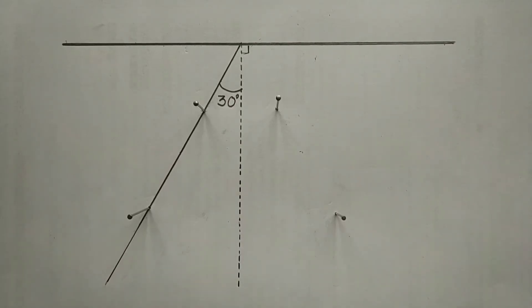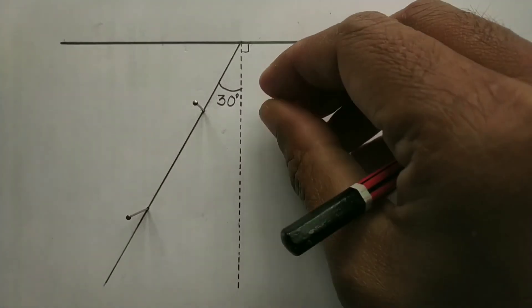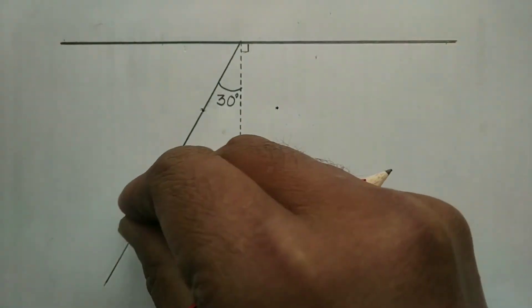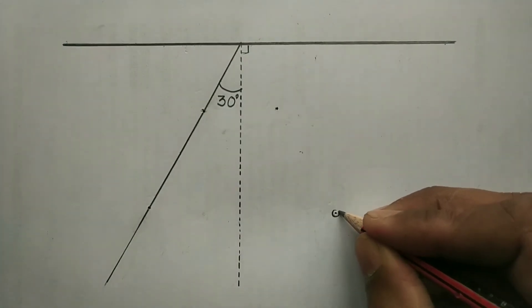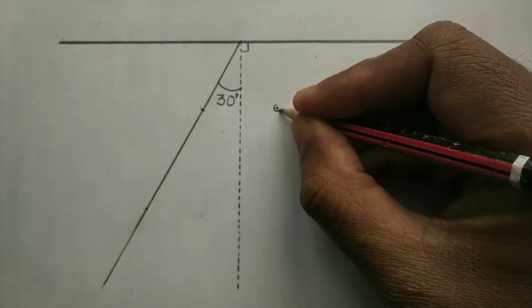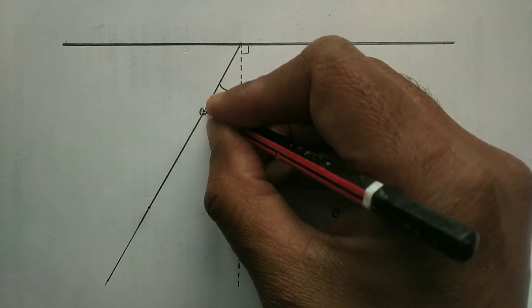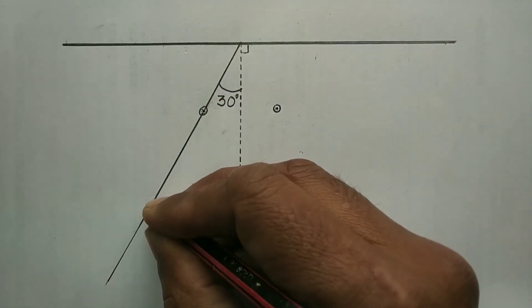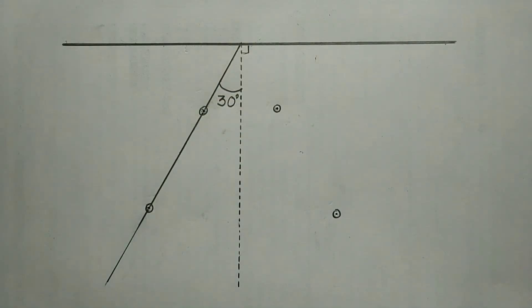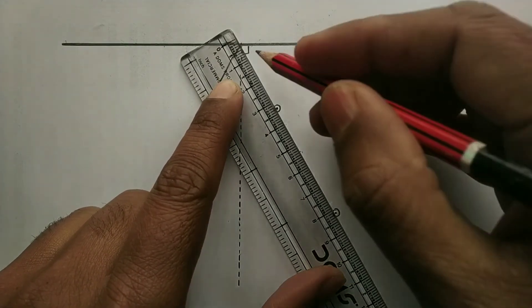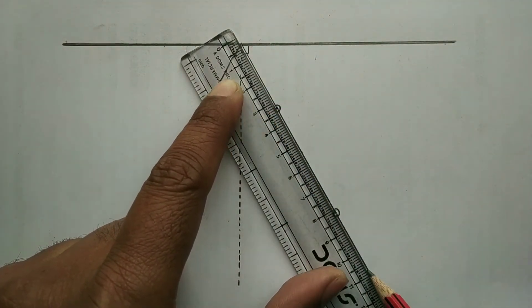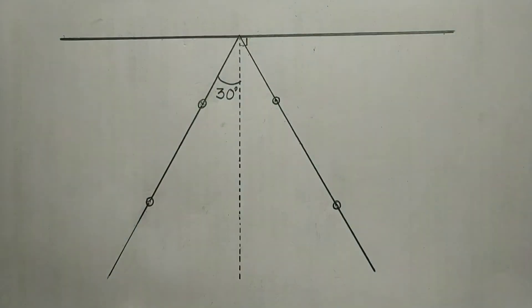Now, after locating the position of the pins, we need to remove the pins one by one and then encircle the position of the pins both on the reflected ray and then encircle the positions of the pins in the incident ray. After that, we need to join the positions of the pins so as to obtain the reflected ray. This is the reflected ray.